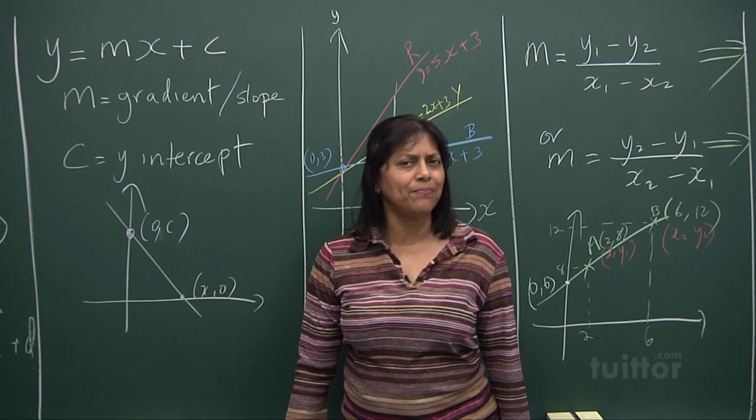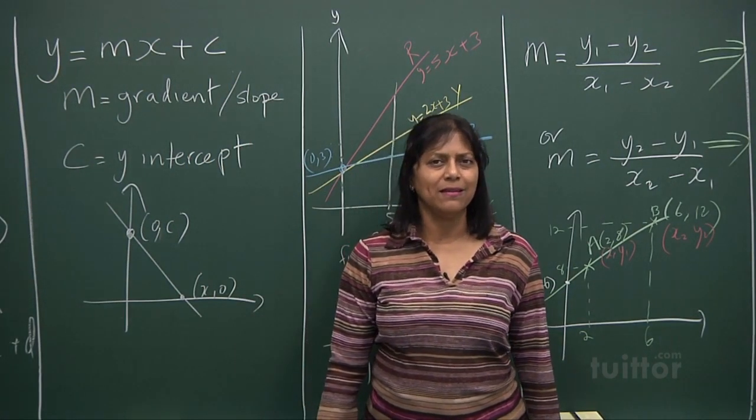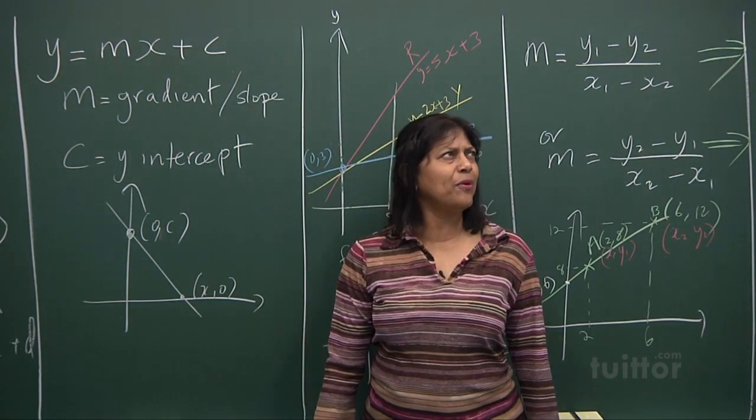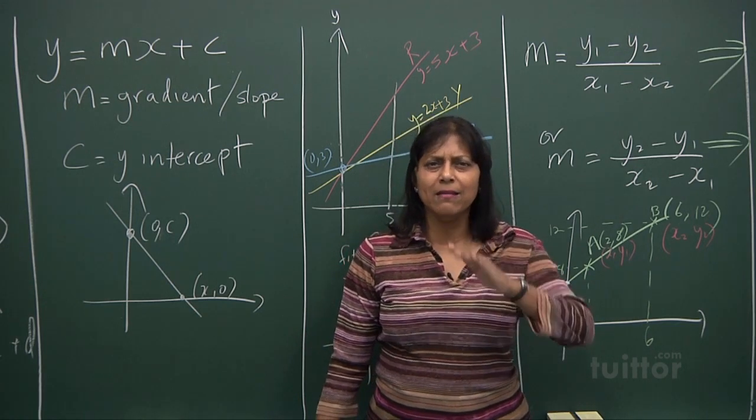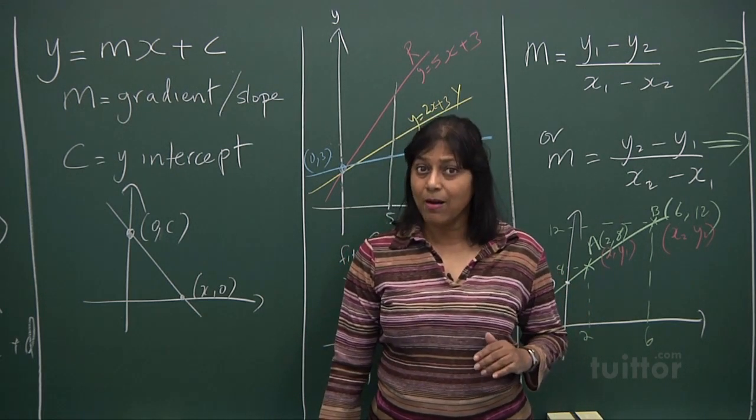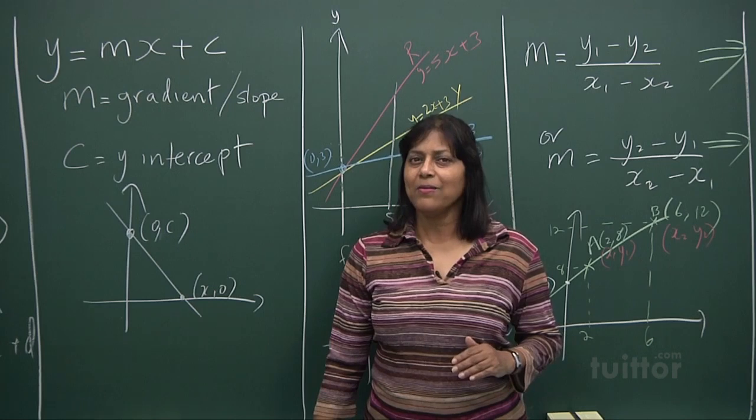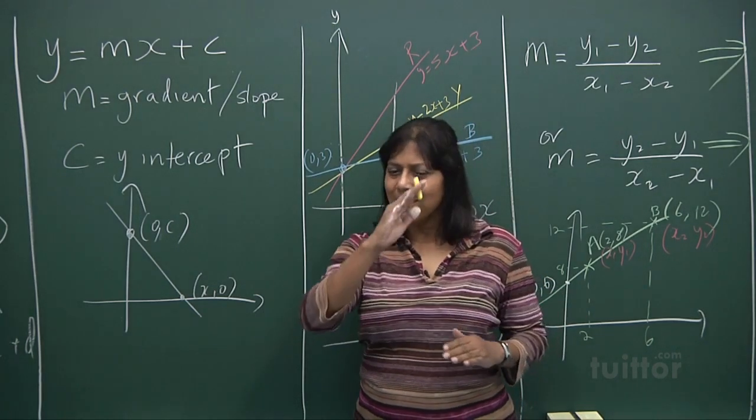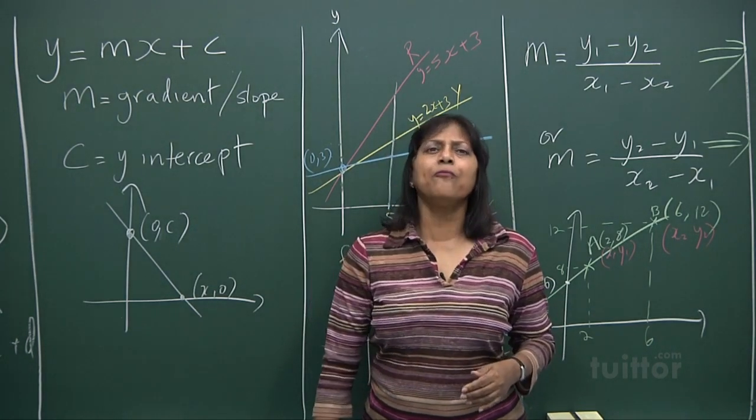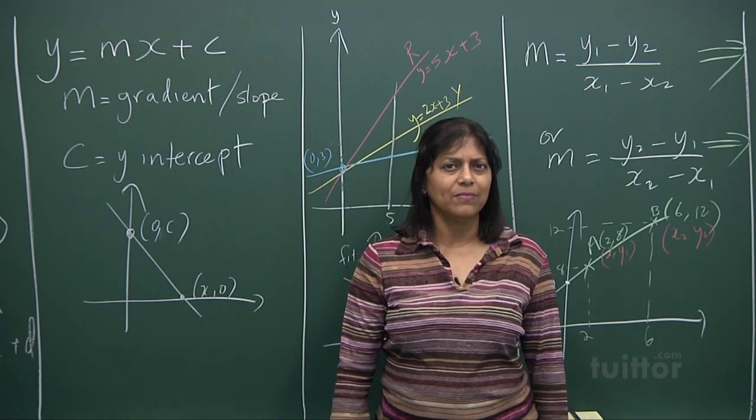Who is m? m is the gradient. What is the meaning of gradient? Gradient, slope. How fast—when x is changing, how fast is y changing? That's the slope.